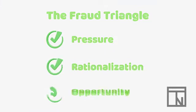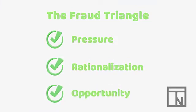The fraud triangle operates on the idea that there are three core ingredients to every fraud case, no matter what kind of fraud or who committed it. These three ingredients are pressure, rationalization, and opportunity.